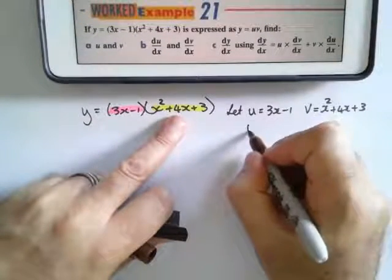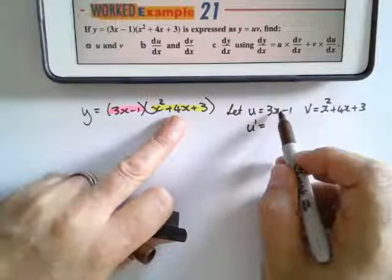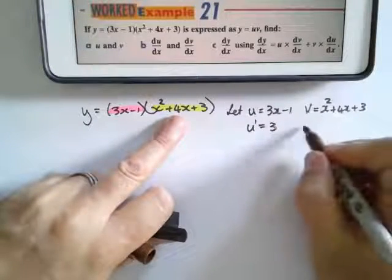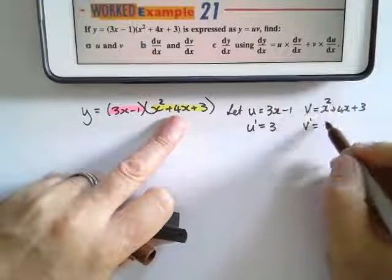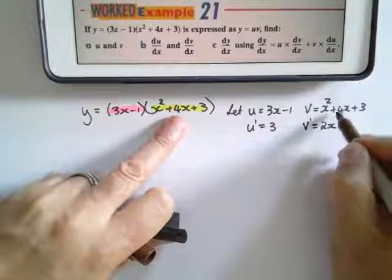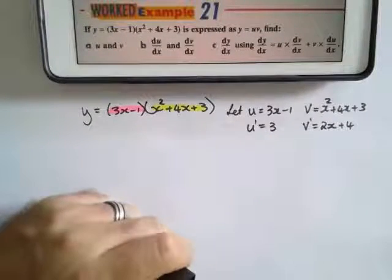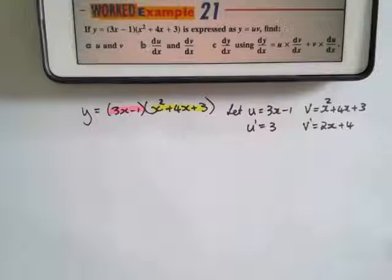So what I'm going to do is find the derivative of u and the derivative of v. The derivative of u is du/dx, so the derivative of this is 3. And the derivative of v equals—2 goes to the front—it becomes 2x plus 4, and the constant falls away.